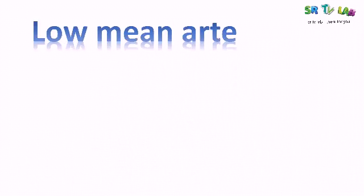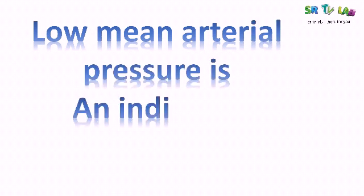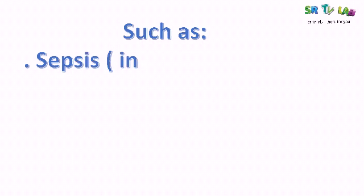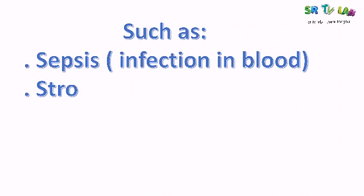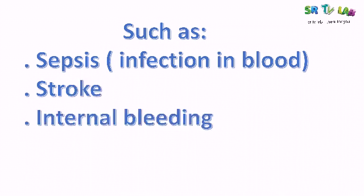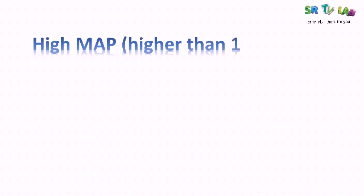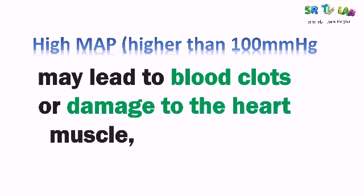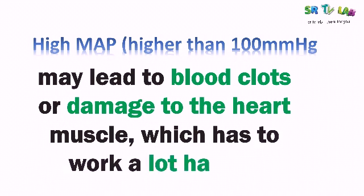Low mean arterial pressure — that is, less than 60 mmHg — is an indicator of conditions such as sepsis (infection in the blood), stroke, and internal bleeding from injury. When mean arterial pressure is high — more than 100 mmHg — it can lead to blood clots or damage to the heart muscle, making the heart work much harder.